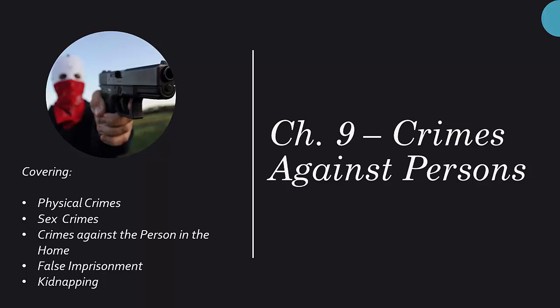Starting off with battery — the thing to keep in mind is that battery involves touch. Battery involves actual touching and there are three elements: the actor's conduct in touching or applying force to the victim; the actor's mental state, which usually involves an intent to injure, criminal negligence, or committing an unlawful act involving the touching or application of force; and there has to be some kind of harm done to the victim by the touching — even a very slight harm.